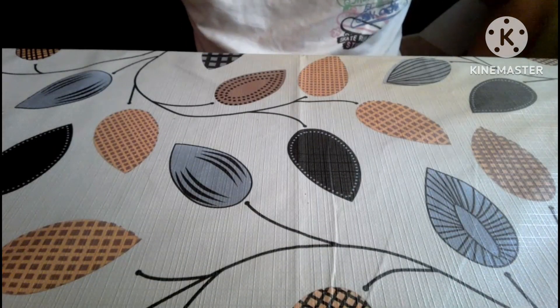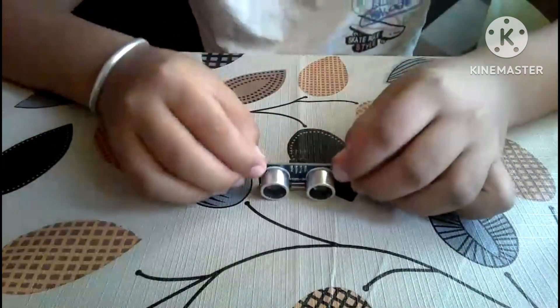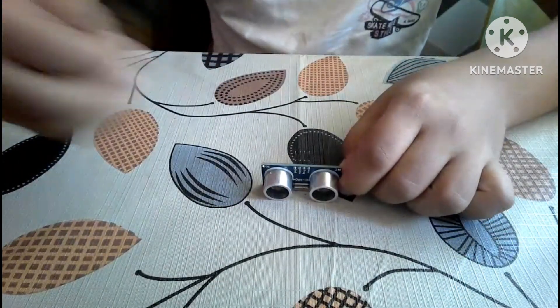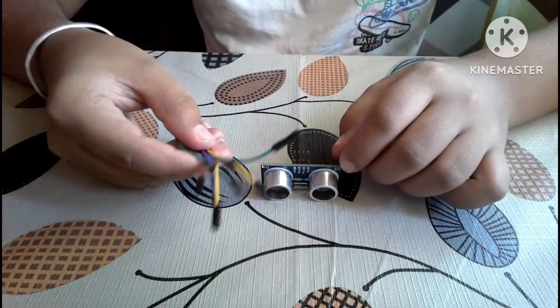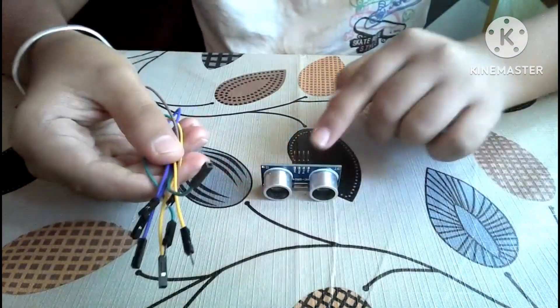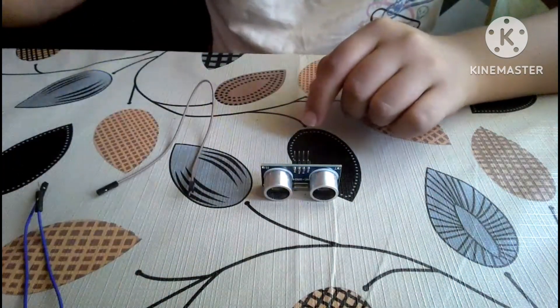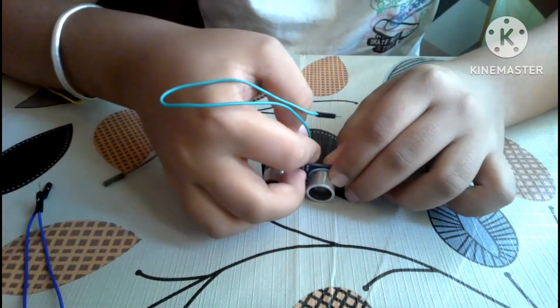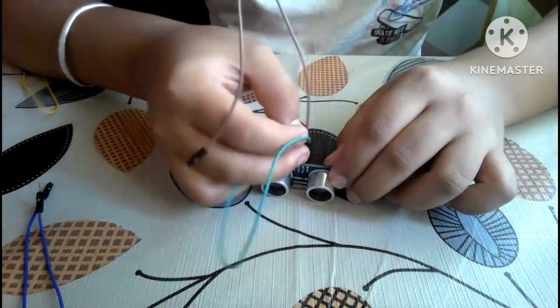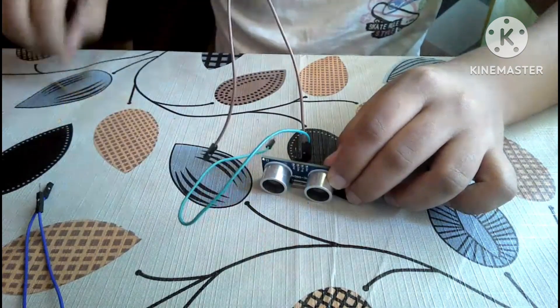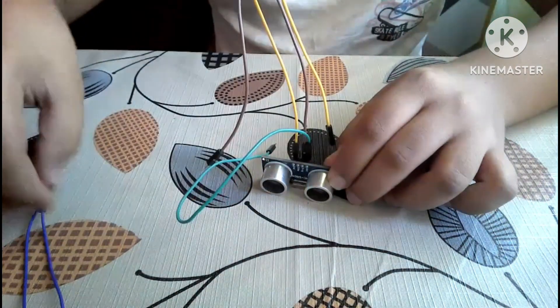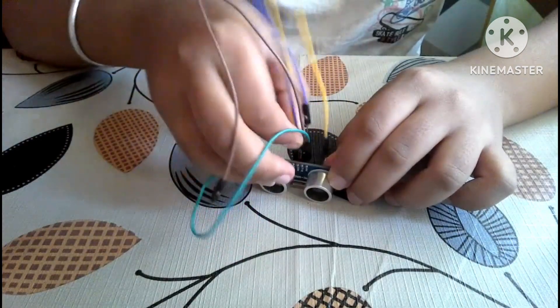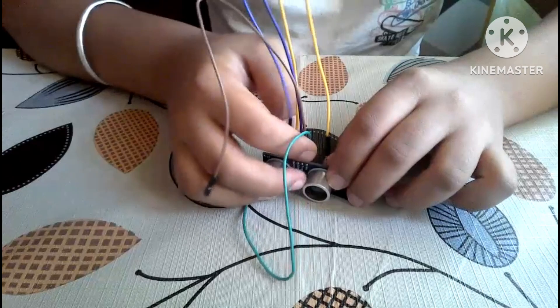Let's start our connections by taking the ultrasonic sensor. Take four male-to-female jumper wires and connect them to the respective pins on the sensor, like this.